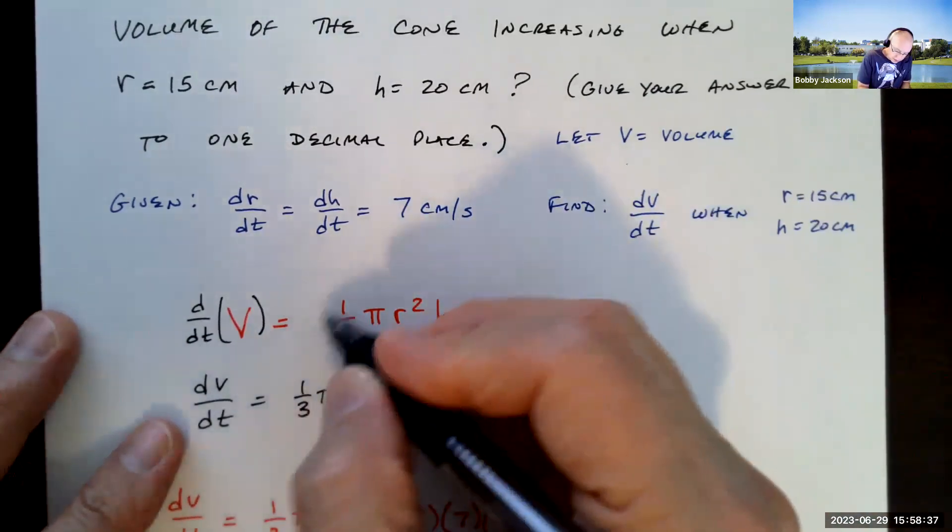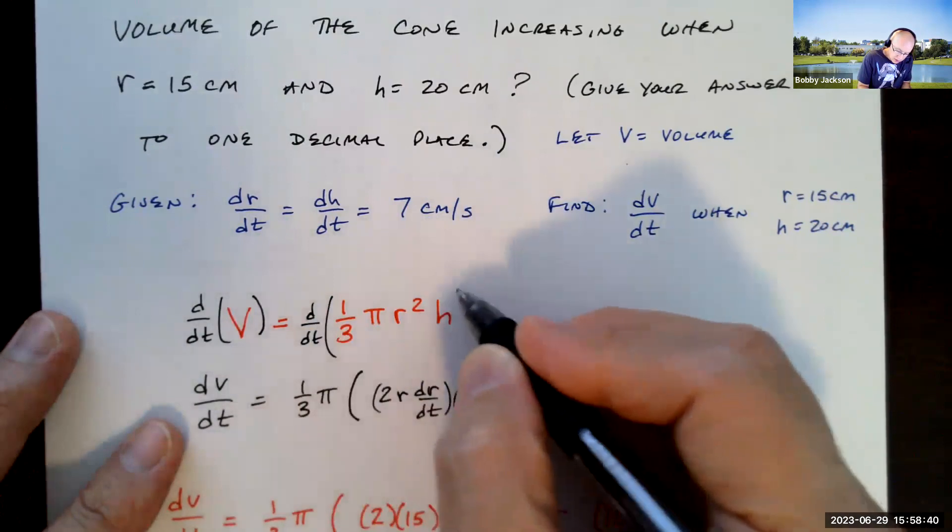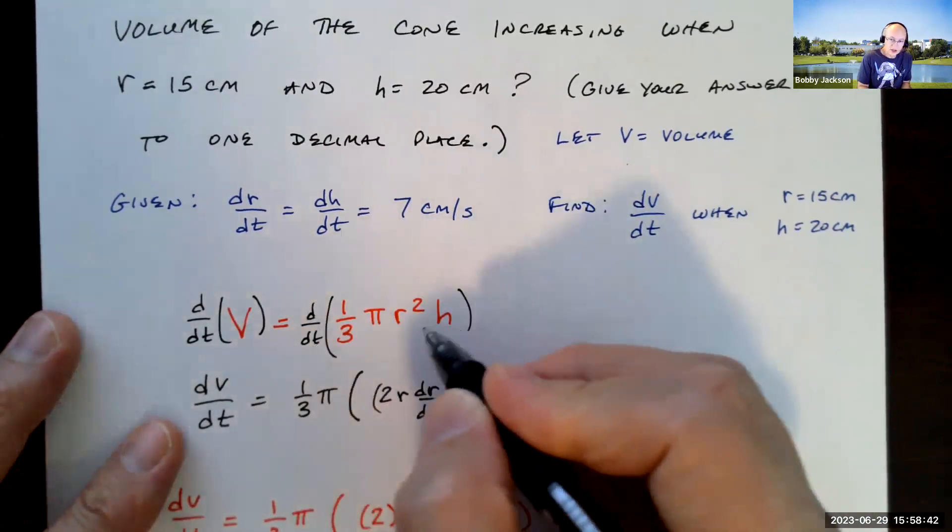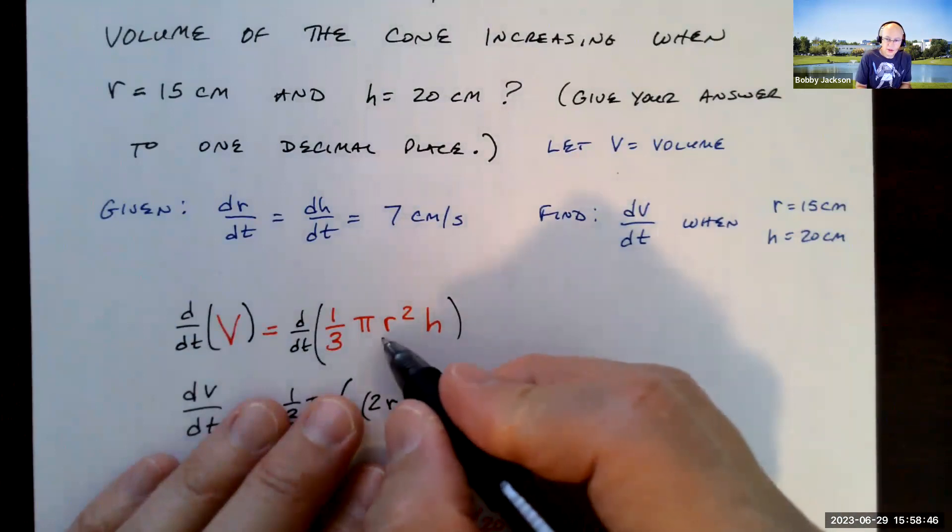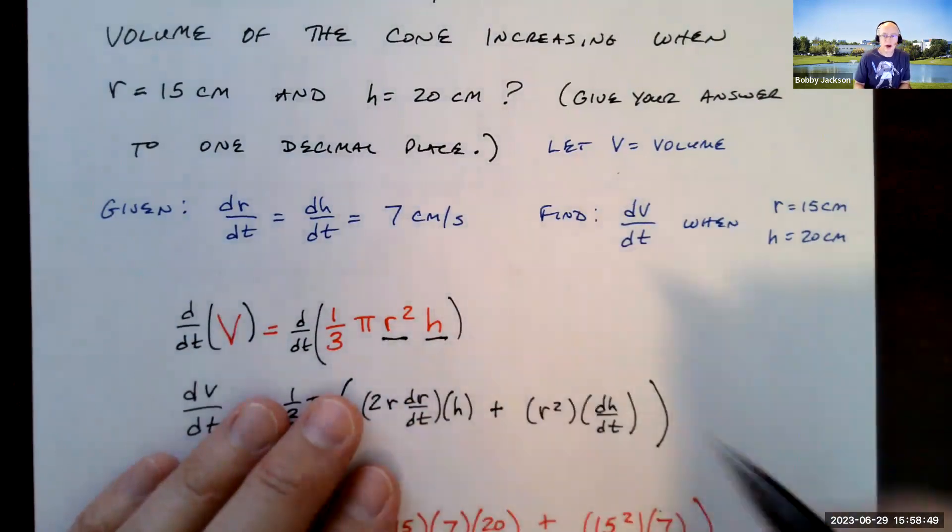So we need to figure out that when I take the derivative with respect to t here, remember it's with respect to t. R and h are both functions of t. And so this is r squared times h. That's a product.